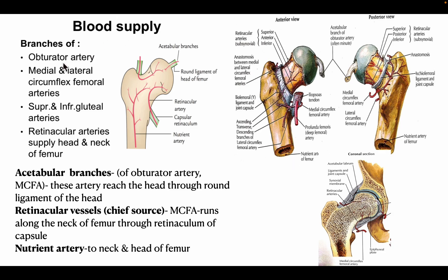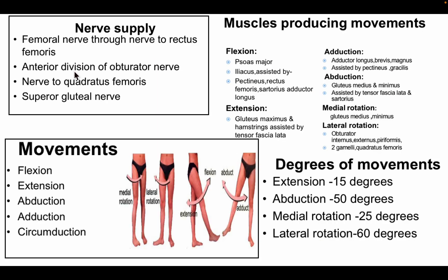Blood supply of the hip joint is provided by branches of the obturator artery, medial and lateral circumflex femoral arteries, superior and inferior gluteal arteries, and retinacular arteries which supply the head and neck of the femur. The acetabular branch — a branch of the obturator artery or medial circumflex femoral artery — reaches the head through the round ligament and supplies the hip joint. The retinacular vessels, main branches of the medial circumflex femoral artery, run along the neck through the retinaculum of the fibrous capsule. The nutrient artery supplies the neck and head of the femur.